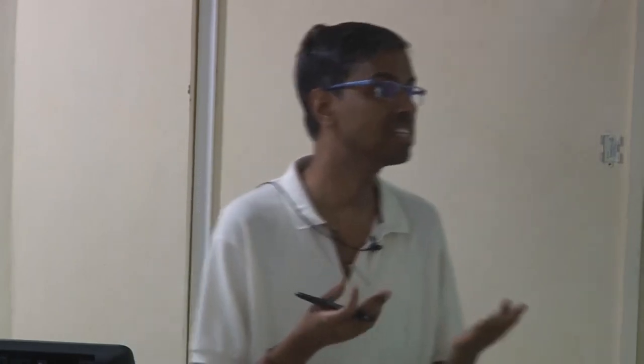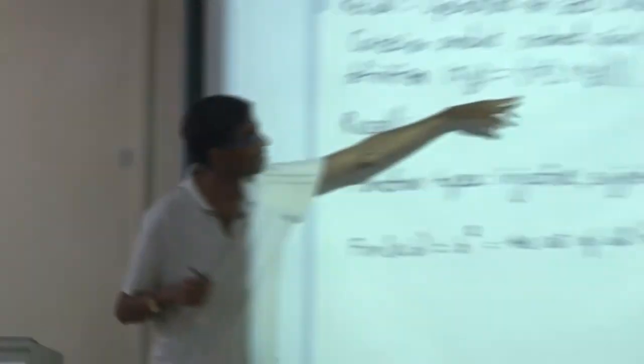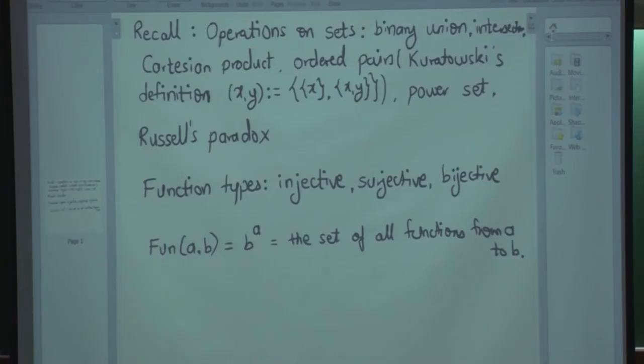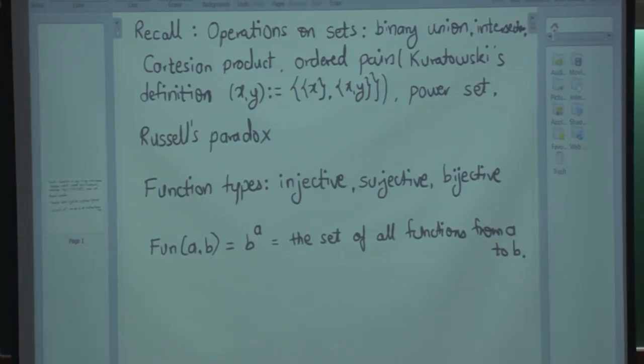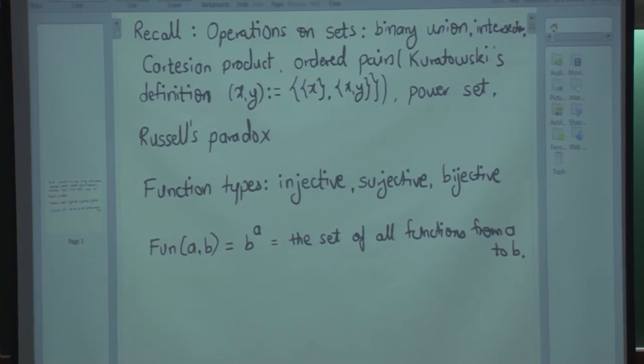Let us quickly recap what we did yesterday: operations on sets. We saw binary unions — union of two sets — then binary intersections, binary Cartesian products, and the elements of Cartesian products were ordered pairs. We use Kuratowski's definition for ordered pairs. We also defined power sets, different function types — injective, surjective, and bijective — and the set of functions from A to B, using notations fun(A,B) and B to the power A.